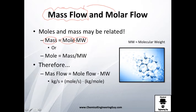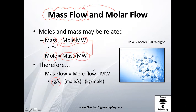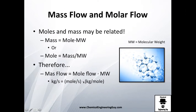To convert, use: mass equals moles times molecular weight, or rearranged: moles equals mass divided by molecular weight. Therefore, mass flow in kilograms per second equals mole flow in moles per second times molecular weight in kilograms per mole. The seconds cancel with seconds, and the moles cancel with moles, giving you kilograms per kilogram — perfect.